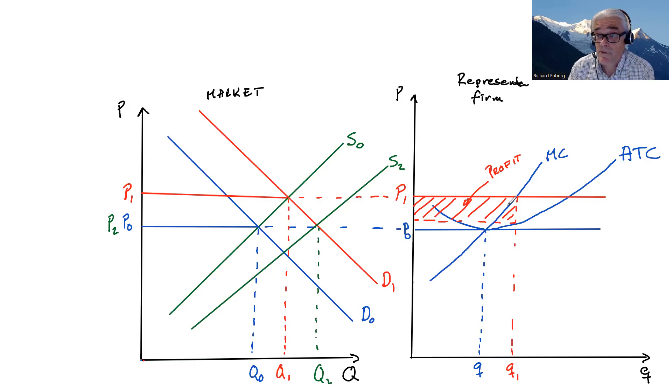Which means that from the perspective of the individual firm, the entry of new firms is pushing prices back down. And in the long run, that firm is back to Q2, the same original profit maximizing quantity.